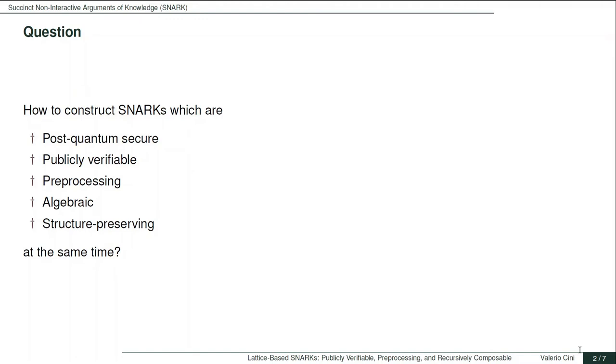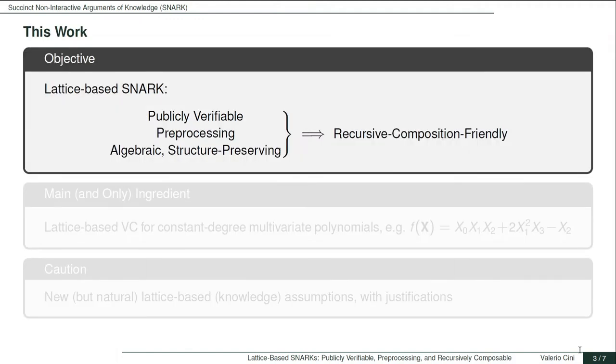In this work, we answer positively to such a question. And to the best of our knowledge, this is the first construction achieving all these properties at the same time. In particular, we show how to construct a lattice-based SNARK, which is publicly verifiable, preprocessing, algebraic, and structure-preserving. All these properties lead to a SNARK that is friendly to recursive composition, that is a SNARK where it is possible to prove knowledge of a SNARK proof using the SNARK itself. This enables very powerful applications such as incremental verifiable computation.